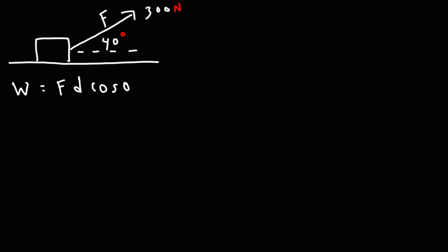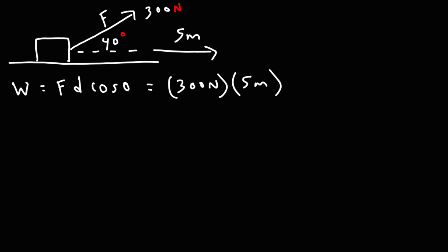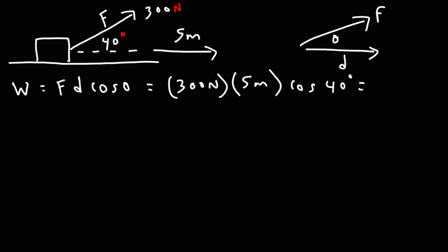Let's say we have a force of 300 newtons directed at an angle of 40 degrees above the horizontal, and we're going to pull this block 5 meters to the right. To calculate the work done, we have a magnitude of 300 newtons, a displacement of 5 meters, and the angle between the two vectors — the force vector and the displacement vector — is 40 degrees. So we use cosine of 40 degrees.